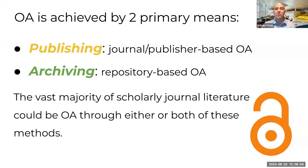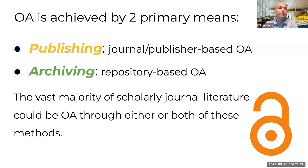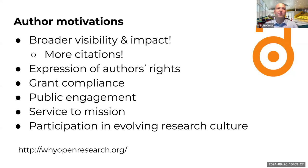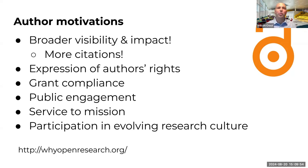OA is generally achieved through two primary means: publishing in open venues, sometimes called gold open access, and through archiving, sometimes called green open access. Between these two paths — the gold road and the green road — there is a pretty clear space to get most scholarly product out in the world. Authors get into this work for a variety of reasons: self-interested visibility, asserting rights over their work, external forces like funders or promotion and tenure committees, or ideological mission-driven reasons. Most authors are doing OA for a combination of these reasons.